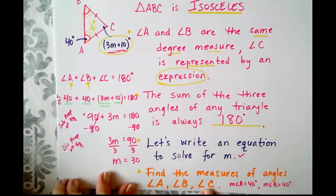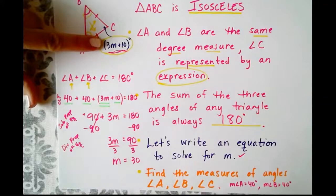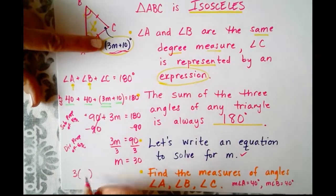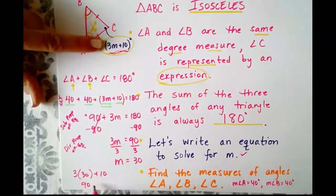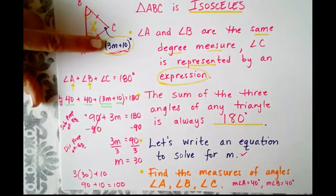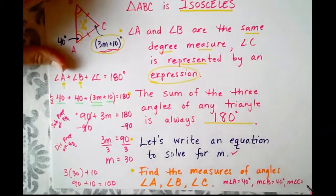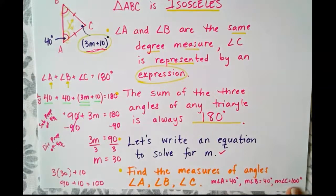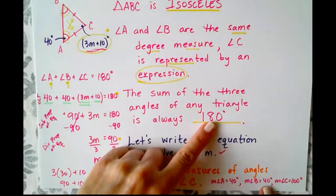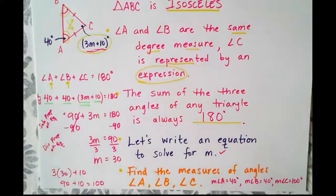Let's find the measure of angle C. To find the measure of angle C, we need to take our value for M, and we need to plug it back into the given expression. So 3 times M is 30. 3 times 30 is 90. 90 plus 10 is 100, which makes sense. So the measure of angle C is 100 degrees. And if we add all three of these, they should add up to 180. 40 plus 40 is 80. 80 plus 100 is 180. So there are two application problems for solving equations. All right. Thank you.